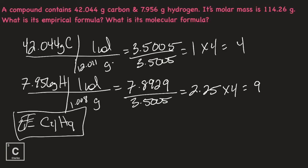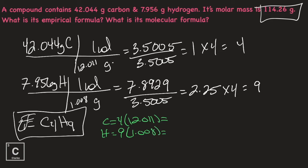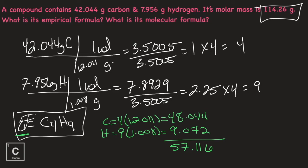0.25 is like a quarter — 25 cents. How many quarters does it take to make a dollar? Four. So four is a good multiplier here. Whatever you do to one, you've got to do to both. So 1 times 4 is 4, and 2.25 times 4 is 9. Our empirical formula is C₄H₉. But we also have to find the molecular formula, so we need this molar mass. First we calculate the molar mass of our empirical formula: four carbons at 12.011, nine hydrogens at 1.008, giving us 48.044 and 9.072, for a total of 57.116. To find our multiplier, we take the original molar mass 114.26 divided by 57.116 — I'm getting 2.00002, so the multiplier is 2. Our molecular formula is C₈H₁₈.